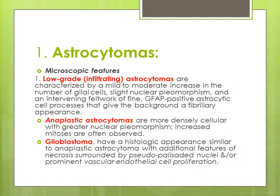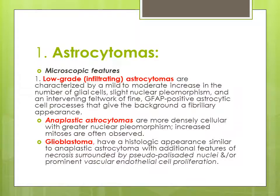Microscopically, low-grade infiltrative astrocytoma is characterized by mild to moderate increased number of glial cells and slight nuclear pleomorphism. The general microscopic features of malignant cells include pleomorphism, loss of similarity to cell of origin, high nuclear-cytoplasmic ratio, increased nucleus size, prominent nucleolus, and an intervening framework of fine GFAP-positive astrocyte cell processes, giving the background of the fibrillary astrocytoma. The anaplastic astrocytoma is more densely cellular with greater nuclear pleomorphism and increased mitoses. Glioblastoma, the most anaplastic and aggressive type, has histological appearance similar to anaplastic astrocytoma plus additional features.